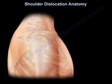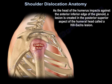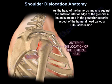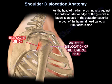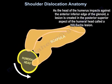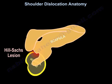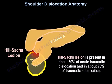As the head of the humerus impacts against the anterior inferior edge of the glenoid, a lesion is created in the posterior superior aspect of the humeral head called Hill-Sachs lesion. It is present in about 80% of acute traumatic dislocation and in about 25% of traumatic subluxation.